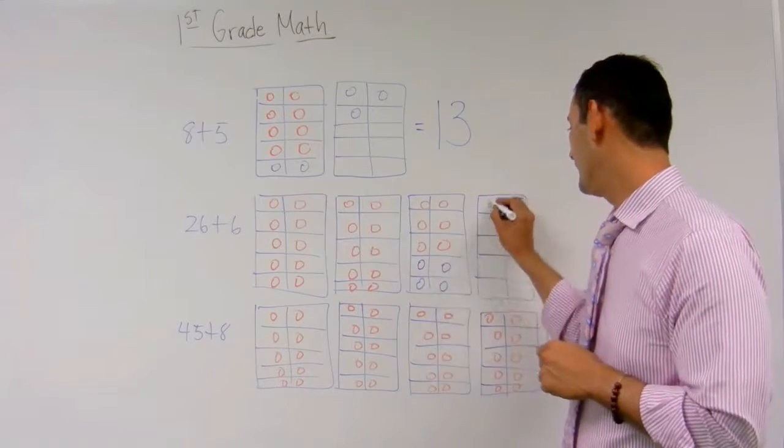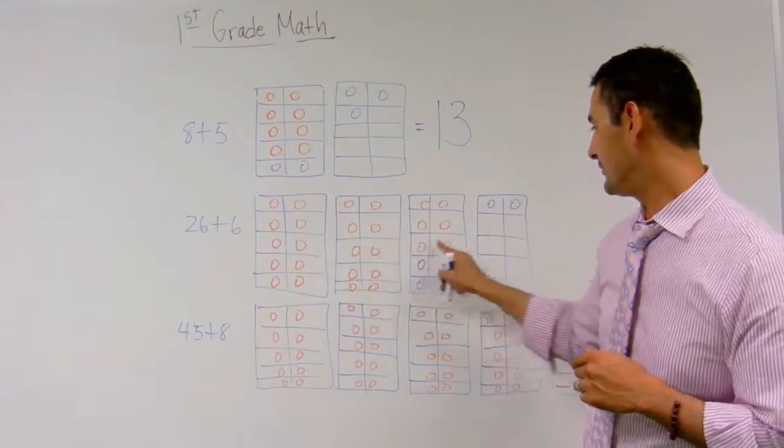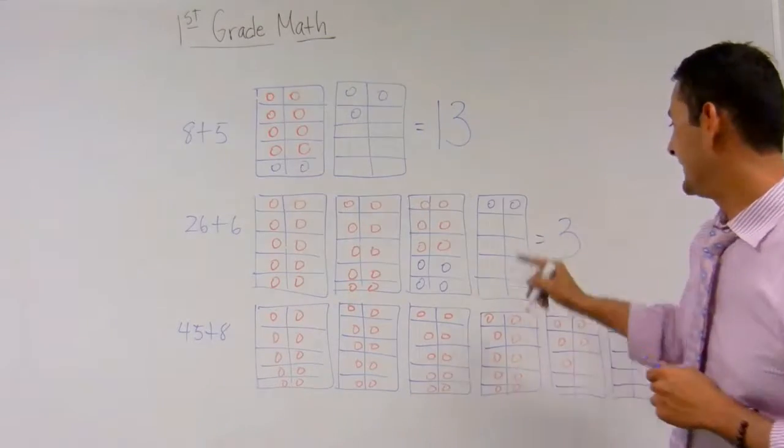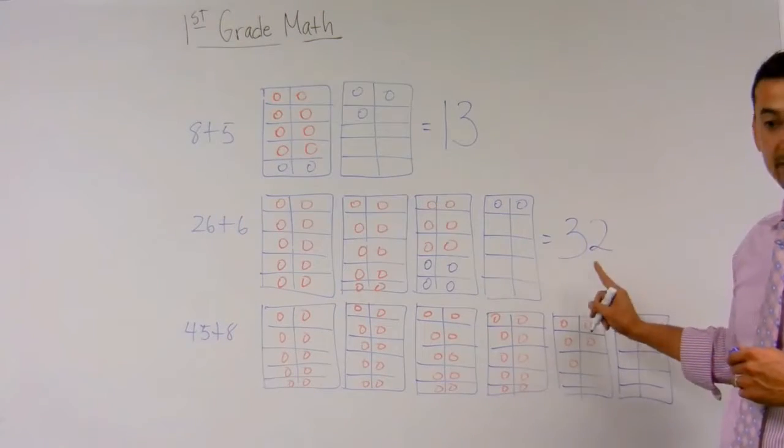One, two, three, four, five, six. And how many tens do I have? One, two, three. How many ones do I have? I've got two. Twenty-six plus six equals thirty-two.